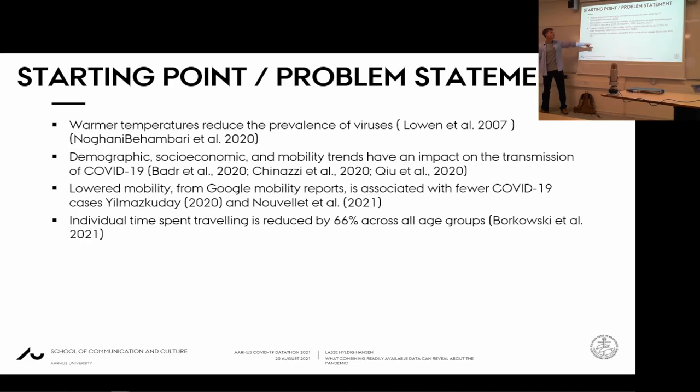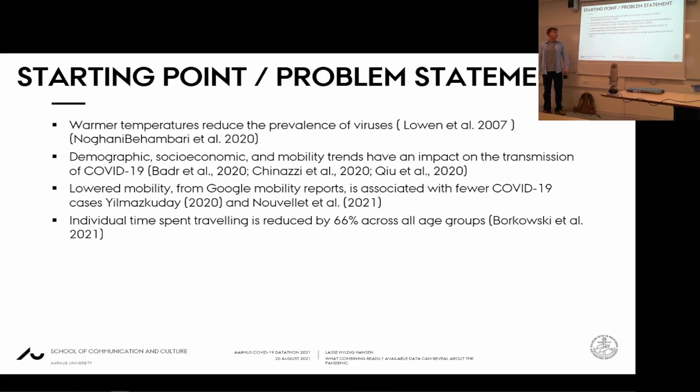We took a starting point in literature showing that warmer temperature reduces the prevalence of virus — people are infected less in society. Also, warmer temperature means you're staying in places that don't cause as much infection. So we have this double effect that we try to disentangle. Demographic, socioeconomic, and mobility trends impact transmission, and lowered mobility from Google Mobility Reports is associated with fewer COVID-19 cases.